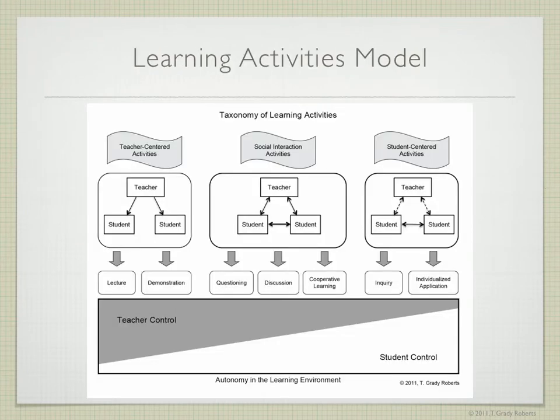We'll first refer back to our taxonomy of learning activities that we introduced in an earlier part of this series. If you notice, inquiry is on the right-hand side underneath the student-centered activities. Looking at the box that shows the interactions, we notice a double arrow connecting the students and students, and then broken double lines connecting the teacher and the students, indicating that there's a lot of interaction between students and a little bit of interaction between the teacher and students.